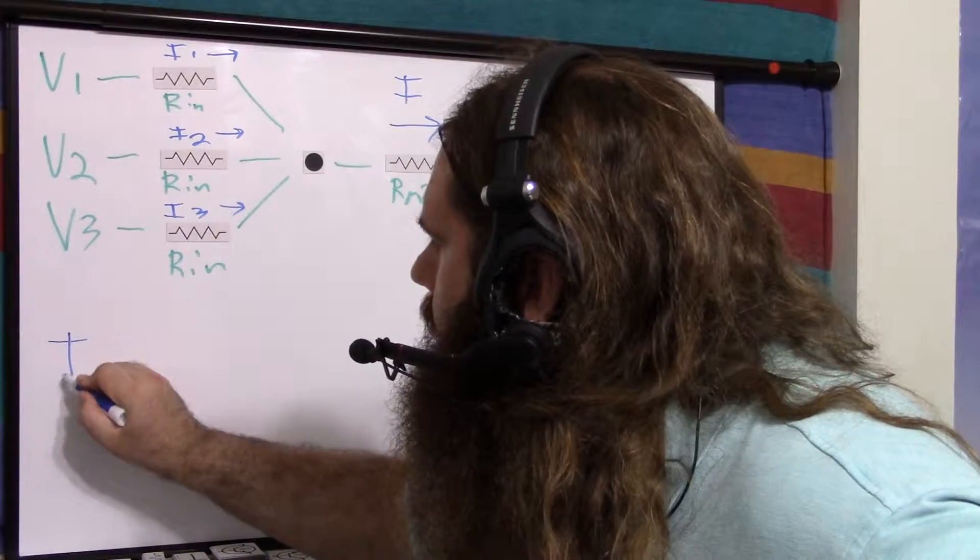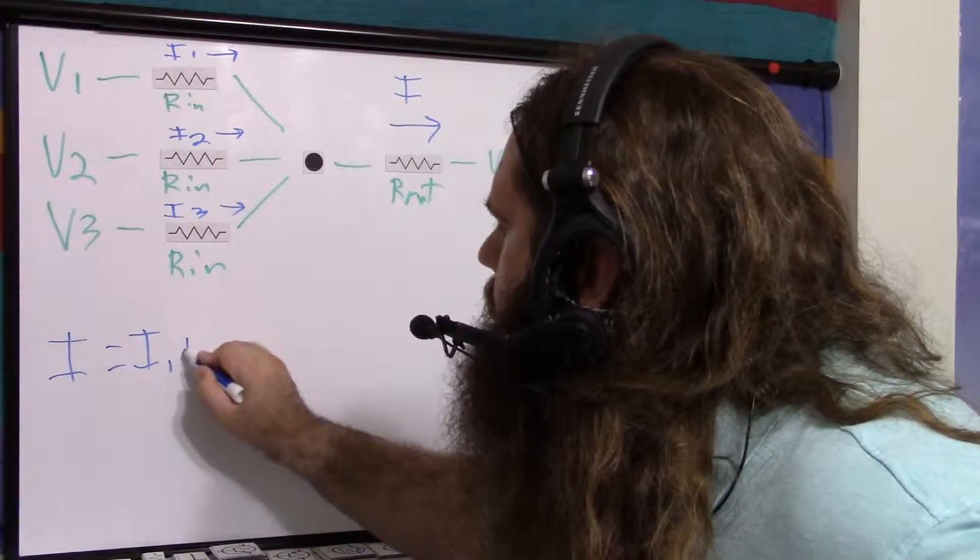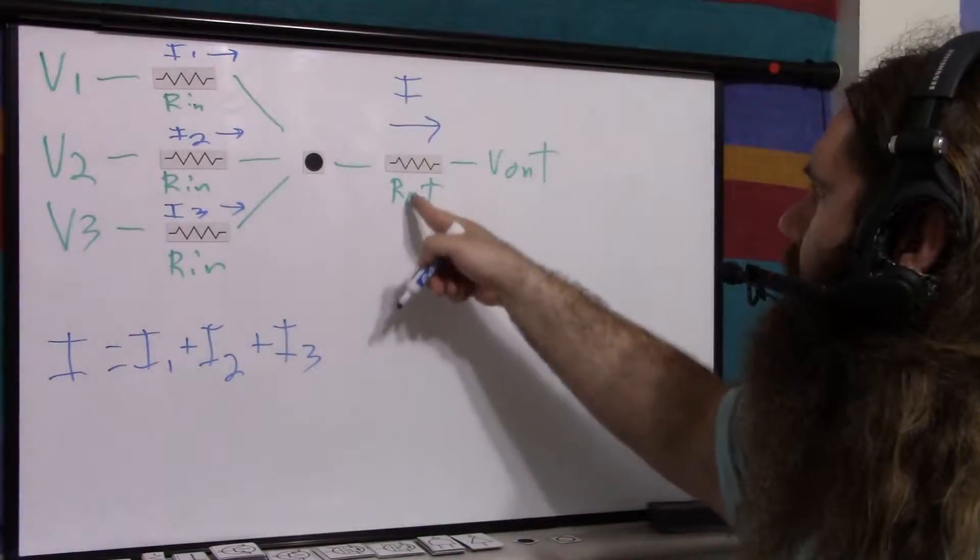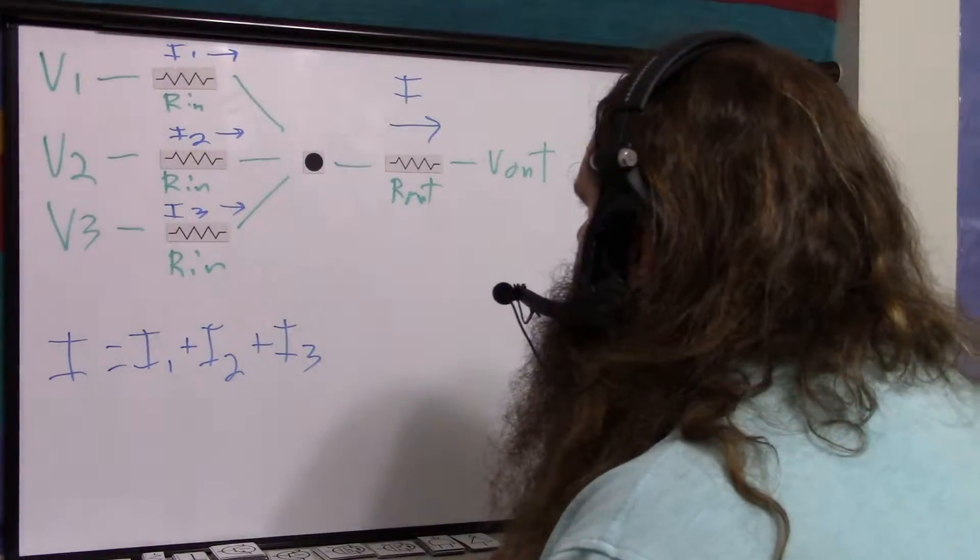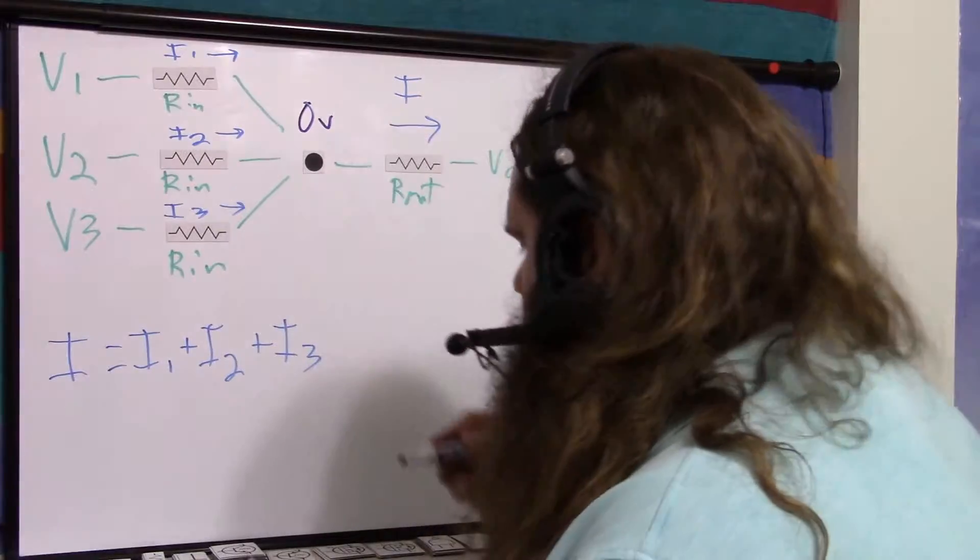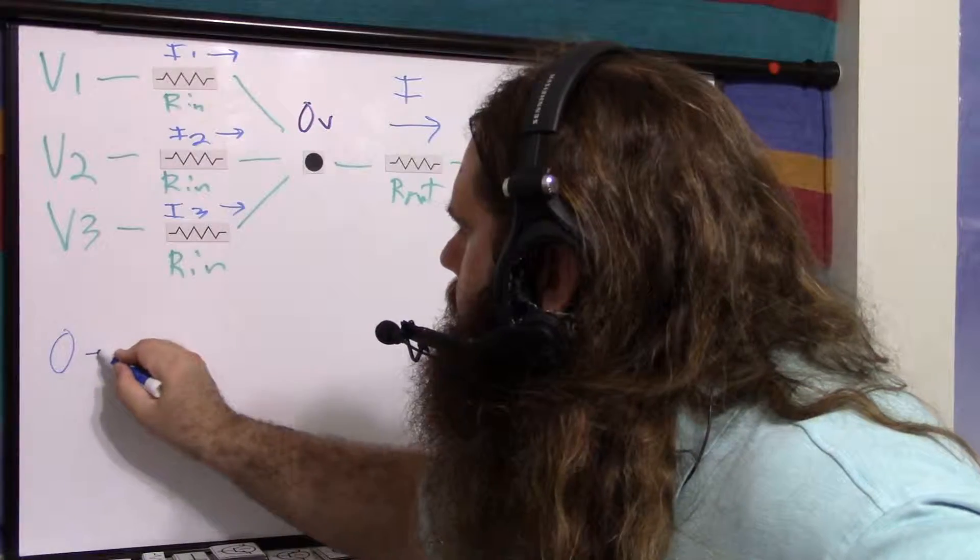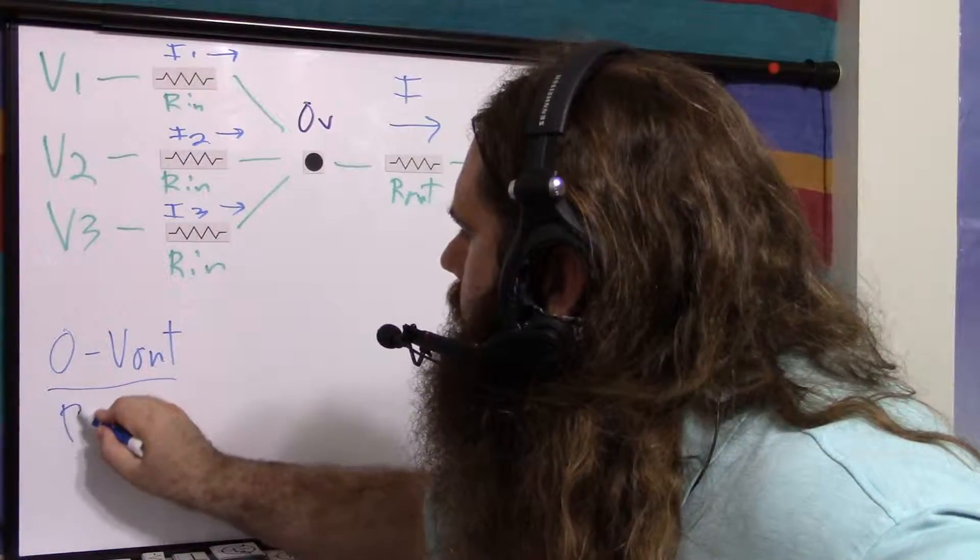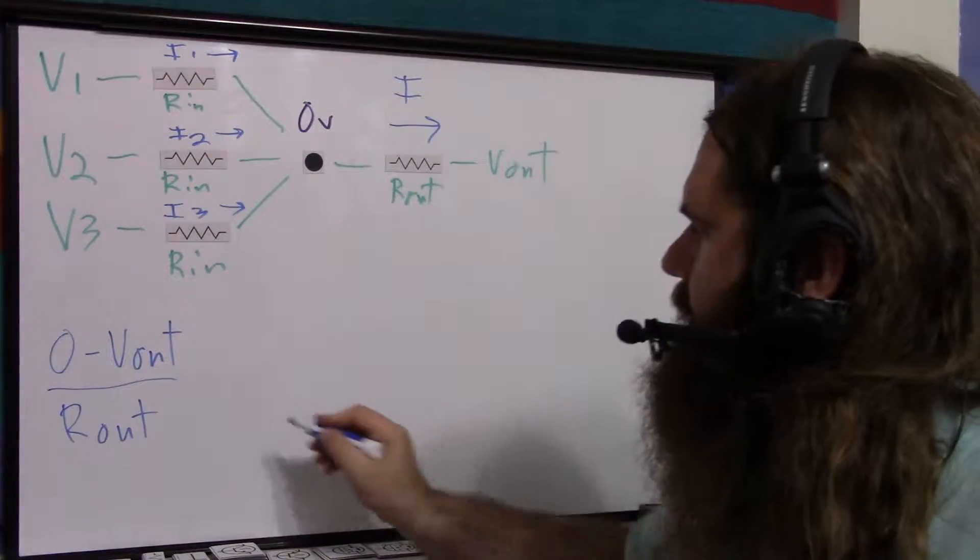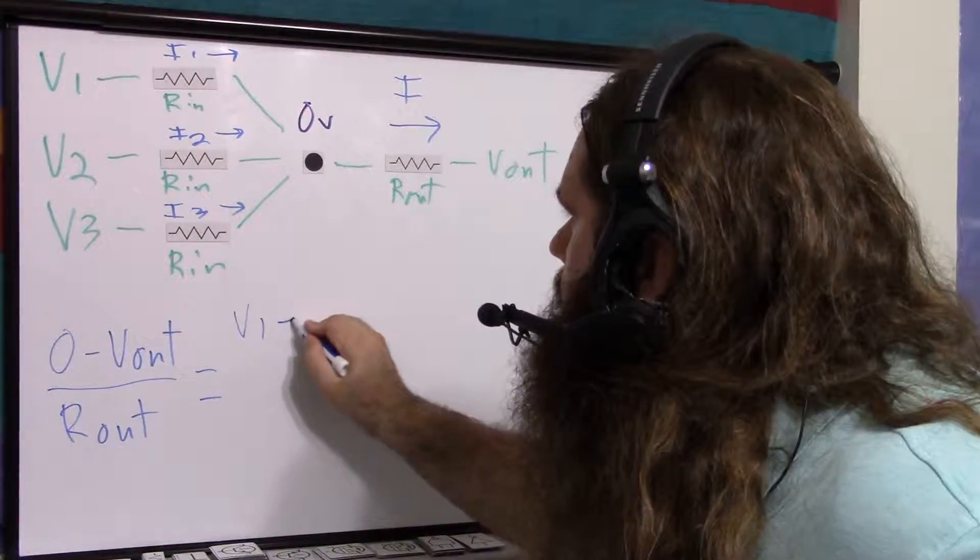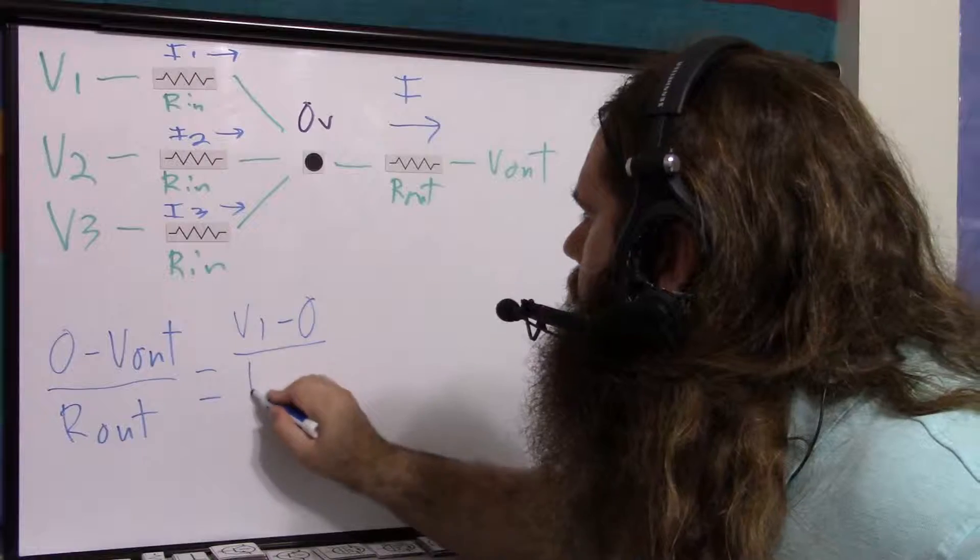So we can say I equals I1 plus I2 plus I3. Well, I, and we'll say, once again, this is 0 volts. So I equals I1 plus I2 plus I3. So I is 0 minus V out over R out, just like before. But that equals the sum. I1 is V1 minus 0 over R in.